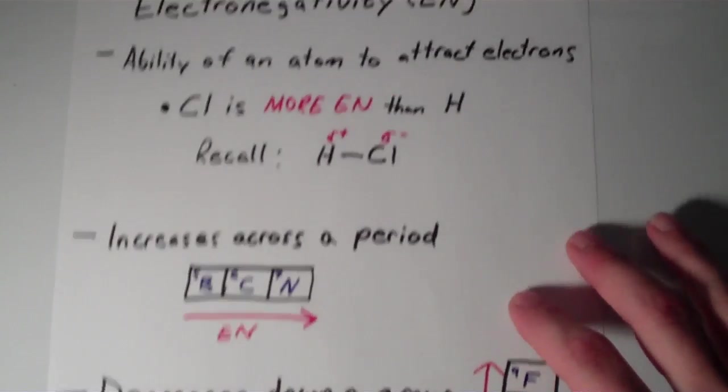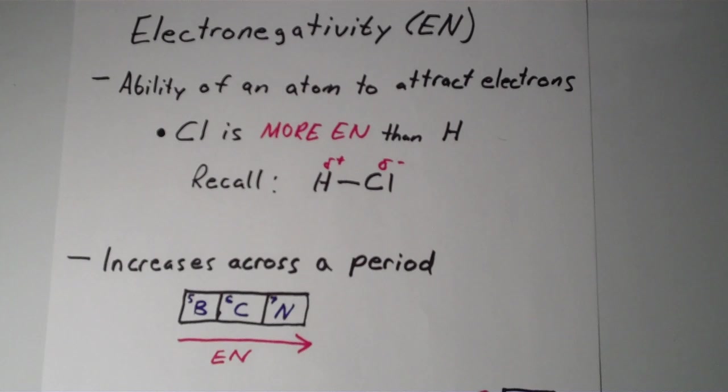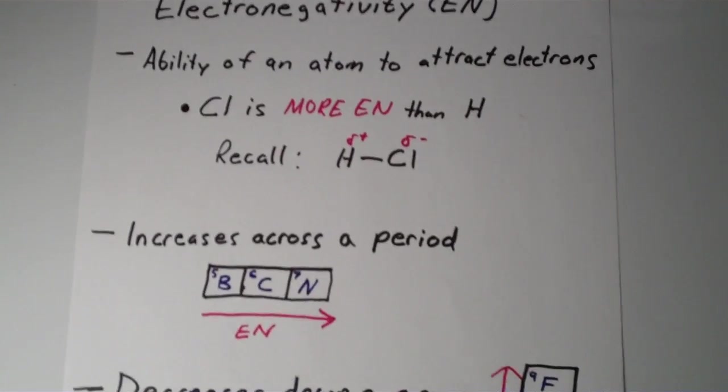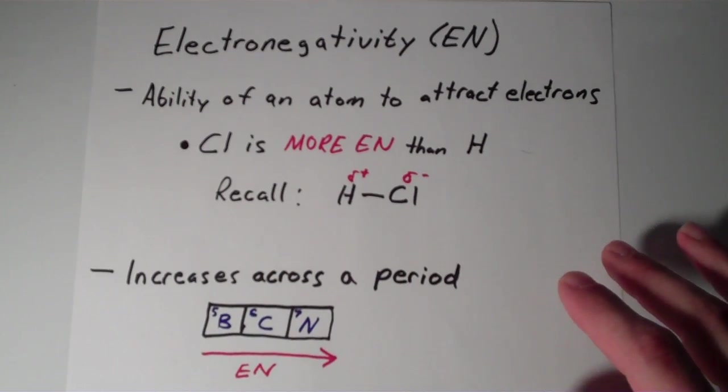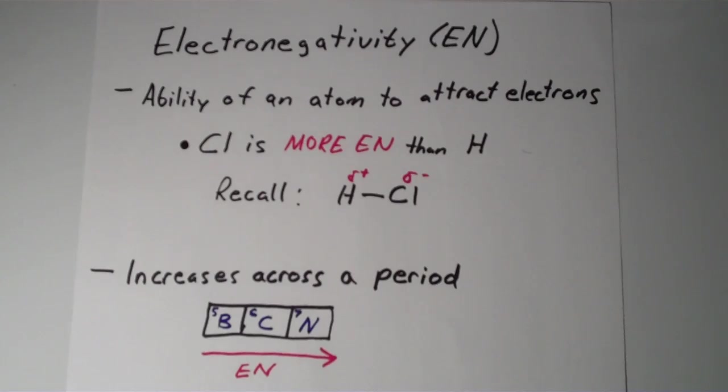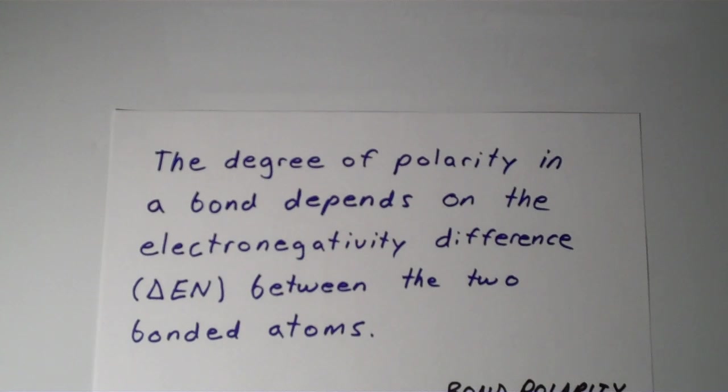We've seen that the more electronegative atom is going to be the one that hogs up the electron density. In other words, the bond is polarized towards the more electronegative atom. Depending on the atoms that you have bonded together, the degree of polarity in any particular bond depends on the difference in electronegativity, which we call delta EN, between the two bonded atoms.